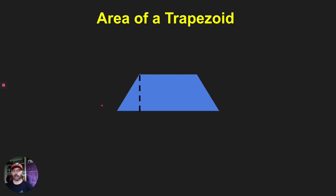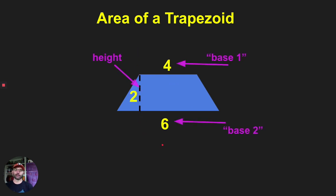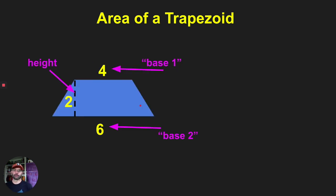Looking at this trapezoid, we call the top side base one and the bottom side base two. This dashed line — just like in a triangle — is going to be the height. Here we have a labeled example where base one is four, base two is six, and the height is two.